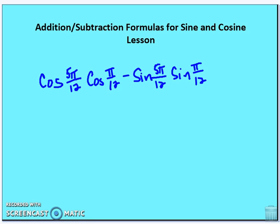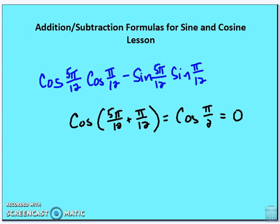Now let's use radian values — same idea of condensing and evaluating. This is also the cosine sum formula: cosine(5π/12 + π/12) = cosine(π/2), which equals 0.